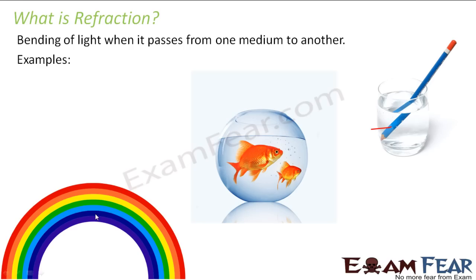Similarly, the rainbow which you see in the sky is also a result of refraction of light. Mostly, a rainbow is observed after rainfall when one part of the sky is sunny while the other part is cloudy. This rainbow is also formed as a result of refraction. We will discuss the formation of a rainbow in detail in one of the later slides. For now, let us focus on the phenomenon of refraction itself.